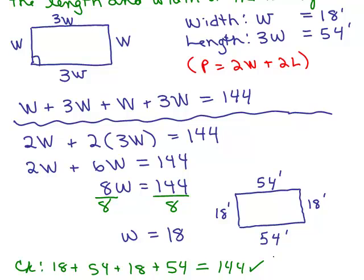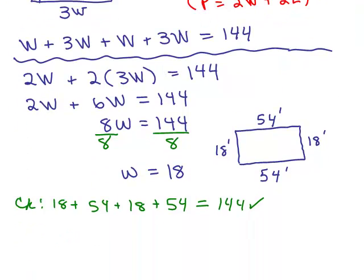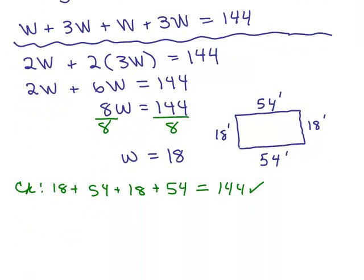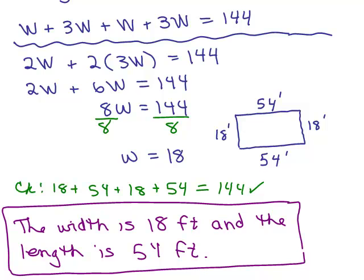Now here's a common mistake. Students will say that the width is 36 because they say it's 18 plus 18. No, the width is just this length here on the side. So the width is 18 and the length is 54. And so that's how we want to write our answer. The width is 18 feet and the length is 54 feet.